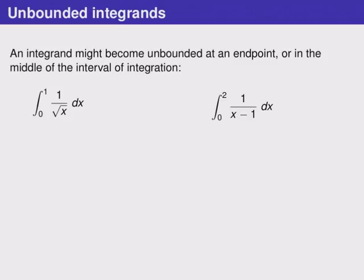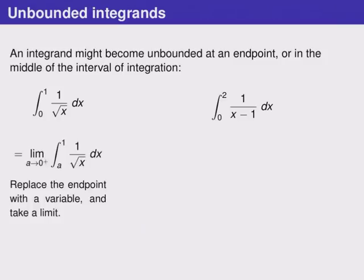On the left here the problem is that x equals 0 because we can't divide by 0. Our solution is very similar to what we did with infinite endpoints. We'll replace that 0 causing trouble with a variable a and we'll take a limit as a goes to 0 from the right, in other words as a goes to the trouble value.